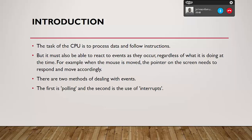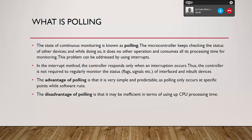There are two methods of dealing with events that come to poke the CPU. The first is polling and the second is the use of interrupts. On slide 4, what is polling? Polling is the state of continuous monitoring. When the CPU is idle, it goes around asking those devices attached to it: do you have anything for me? And if any one of them has something, it gives it to the CPU.